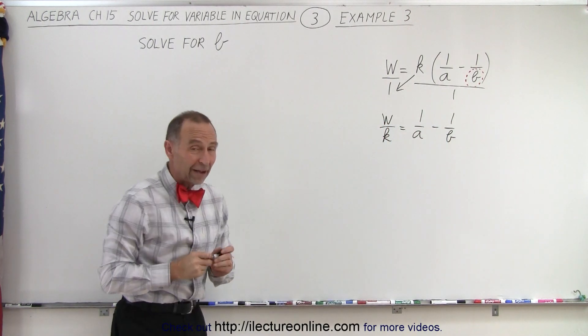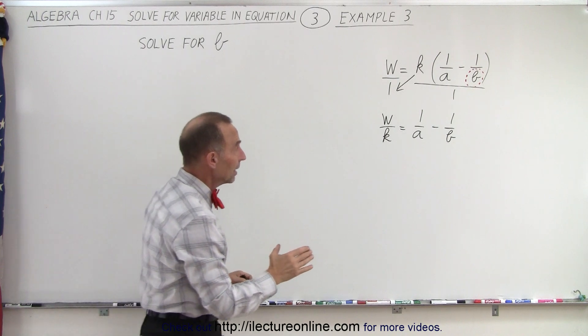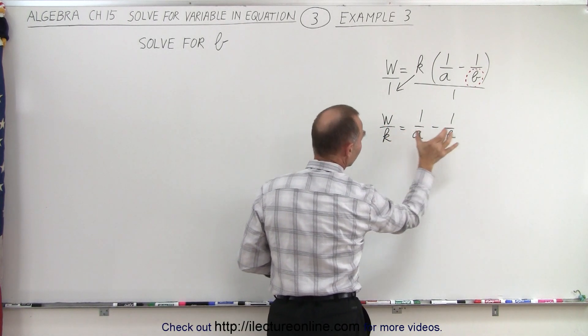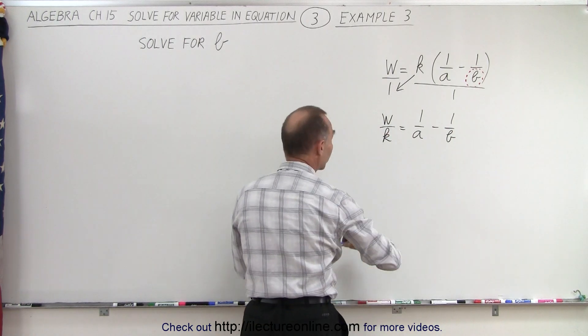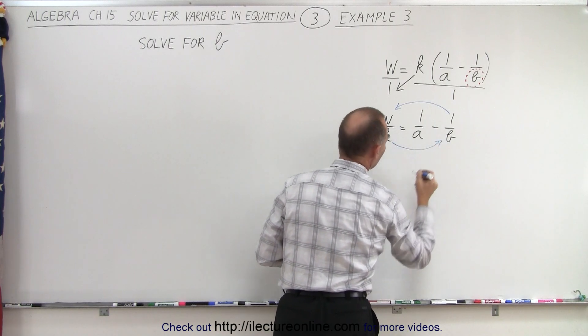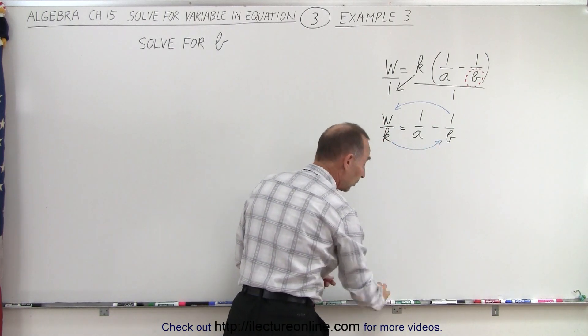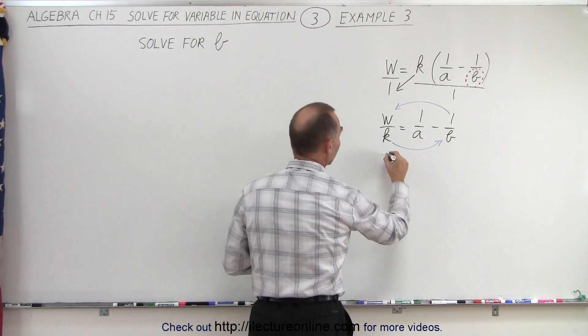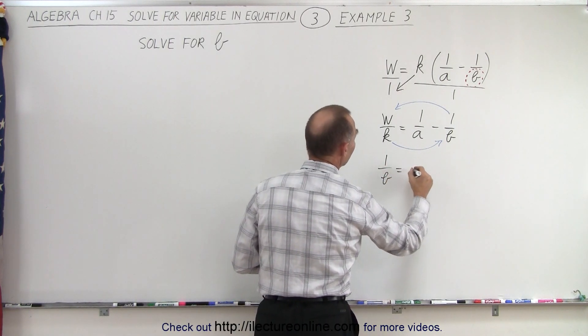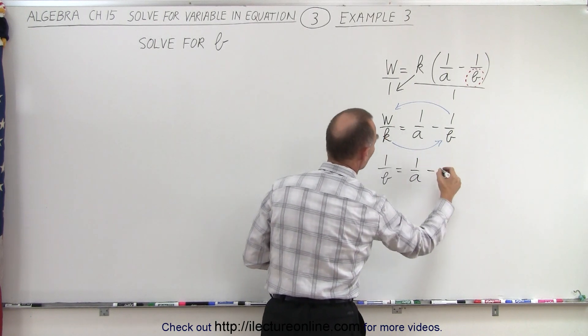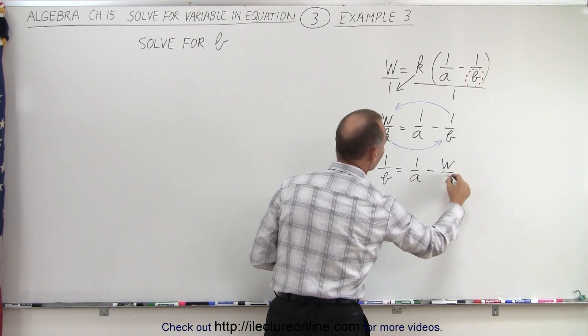So now, since we have to isolate b, it would be a good idea to take this fraction, move to the left, and take this fraction, move it to the right. So what we're going to do here is take the 1 over b, move it to the left side, and w over k and move to the right side. And remember, when we cross equal sign, the sign must change. That means that this becomes 1 over b is equal to 1 over a minus, because it takes a plus and turns into minus, w over k.